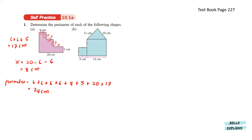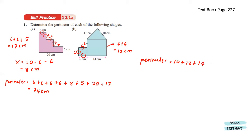Similar to A, these tiny lines indicate that they are the same length. Let's label them first. Since we know the length of these two sides, we can find the length of this side. That will be 6 plus 6, giving us 12 centimeters. Now that we know the length of all sides, the perimeter equals to 10 plus 12 plus 14 plus 6 plus 6 plus 6 plus 6 plus 11. That gives us the perimeter at 71 centimeters.